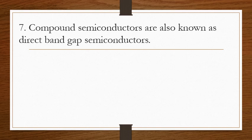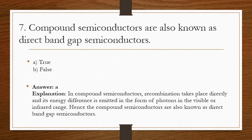Question 7: compound semiconductors are also known as direct bandgap semiconductors — true or false? The answer is A, true. In compound semiconductors, recombination takes place directly and the energy difference is emitted in the form of photons in the visible or infrared range. Hence, compound semiconductors are known as direct bandgap semiconductors.